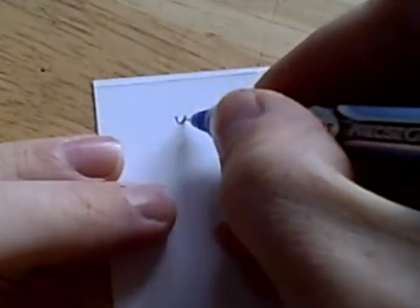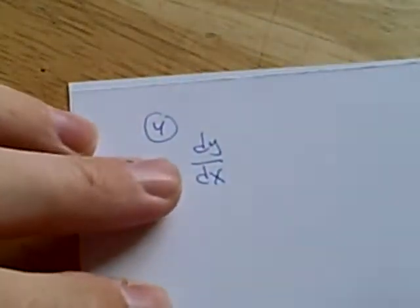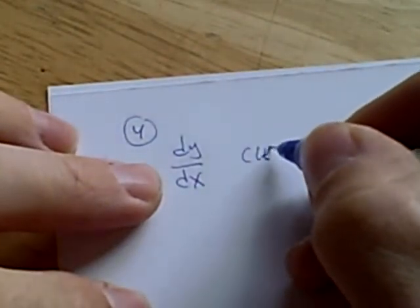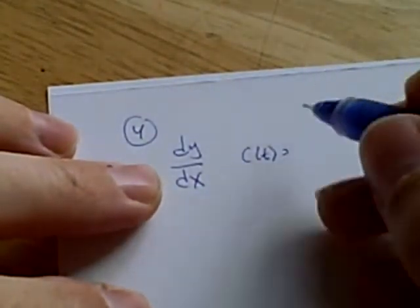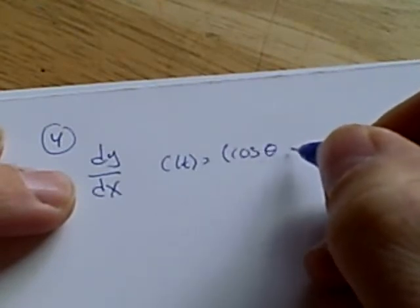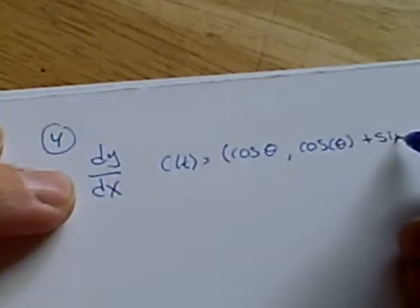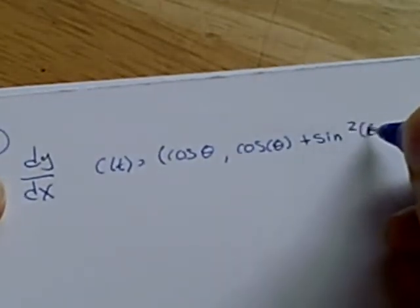Question 4 is asking for a derivative. And this was a quiz question we had in the first quiz, was to find dy dx. Given a parametric equation, in this case, it is cos θ, cos θ plus sin squared θ.